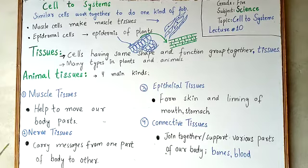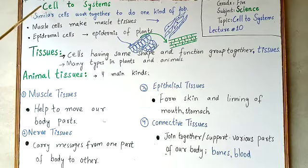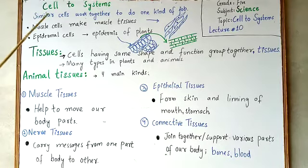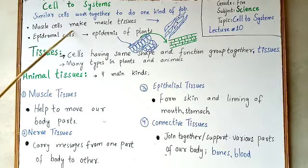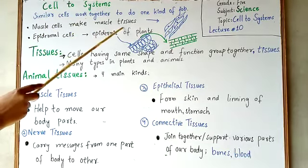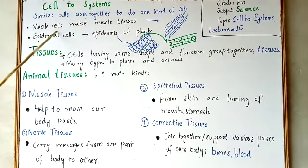In the previous chapter we have studied that cells are the building blocks of living organisms and cells are also the smallest units of living organisms. So when cells combine together to perform one kind of function, they will form tissues.